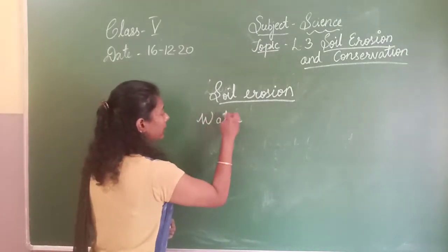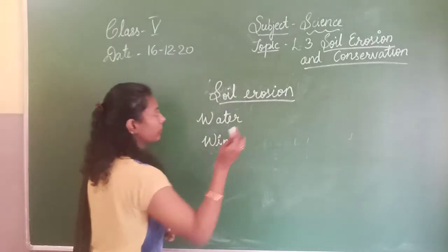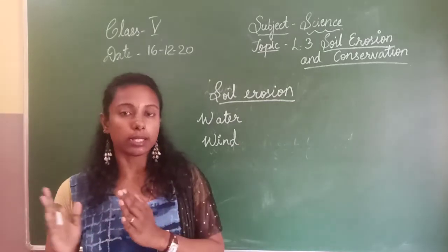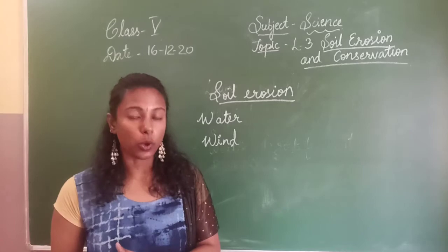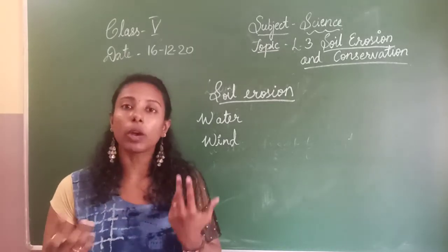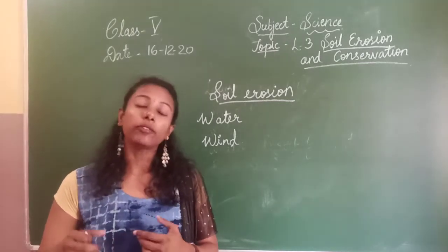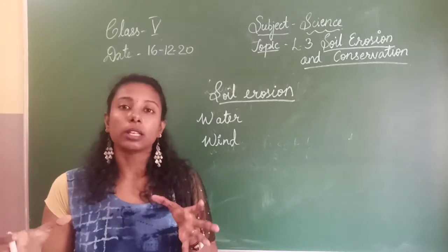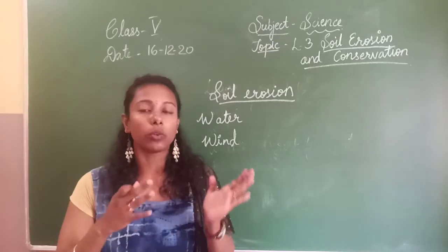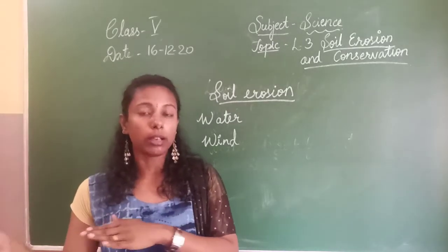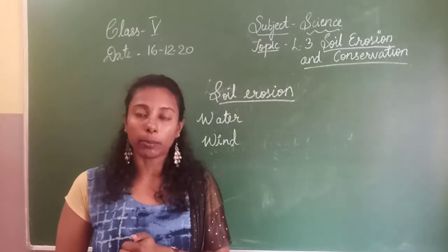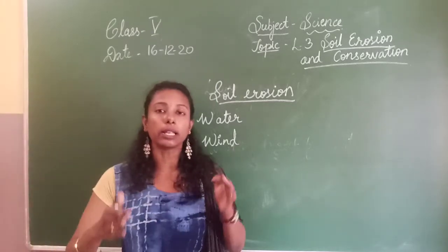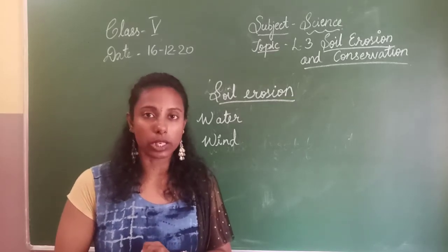The natural agents of soil erosion are water and wind. When the topmost layer is carried away — the most fertile part of the soil — plants will not be able to grow properly. If plants cannot grow, then the soil becomes very loose and the support system is lost. Easily the wind or water can carry away the soil from one place to another. If plants or crops are not growing, soon the land will become barren — not fit for growing crops.